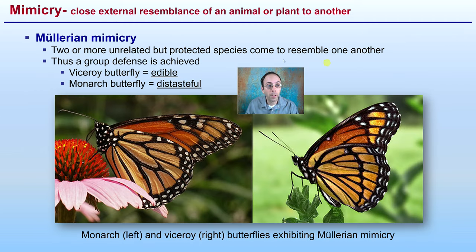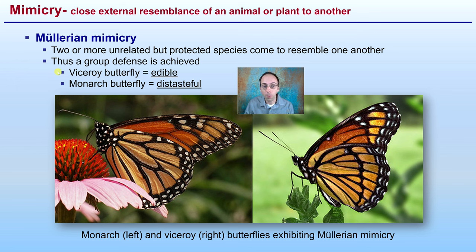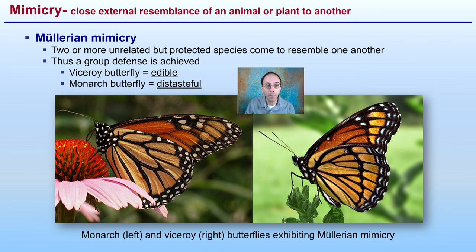The other form of mimicry is called Müllerian mimicry, where two or more unrelated but protected species come to resemble one another, achieving a group defense. We have the viceroy butterfly, which is an edible butterfly, and the monarch butterfly, which is very distasteful. Here we see the monarch on the left and the viceroy on the right — examples of two butterfly species exhibiting Müllerian mimicry.